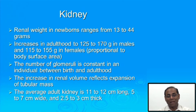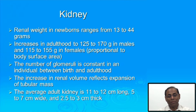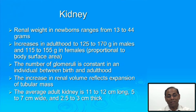In the newborn, kidney weight ranges from 13 to 44 grams and increases in adulthood to 125 to 170 grams in males and 115 to 155 grams in females. This weight is usually proportional to body surface area. Interestingly, the number of glomeruli is constant in an individual from birth to adulthood. The increase in weight from 13–44 grams to almost 170 grams is due to expansion of the tubular mass.